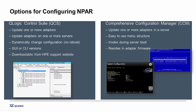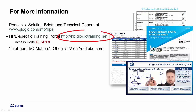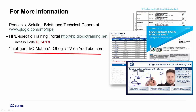The key difference between the two approaches is that QCS is a single-pane-of-glass management utility that works across multiple servers, whereas CCM is a utility that works on each individual server one at a time. For more information, visit our HPE-specific microsite at www.qlogic.com/info/HPE, where you'll find information on N-PAR, adapter technology, white papers, data sheets, line cards, technology briefs, and more. For HPE-specific Qlogic training on I/O technology, check out the HPE training site and use the access code shown to view the HPE-specific material. Also check out more videos on the Qlogic TV YouTube channel under the Intelligent IO Matters video series.